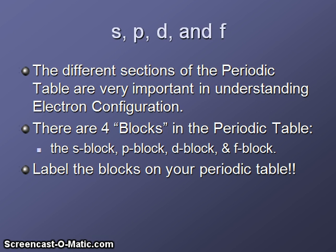The periodic table is divided into four blocks and these are very important for understanding electron configuration. The four blocks are the S block, P block, D block and F block. As we look at the next slide we'll have you label your individual periodic table also.